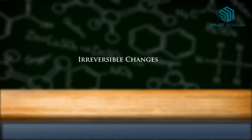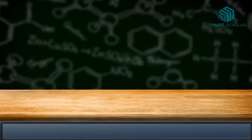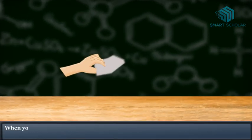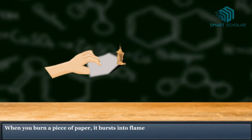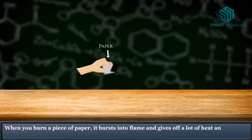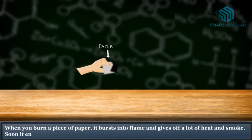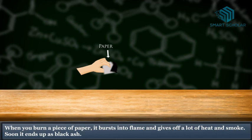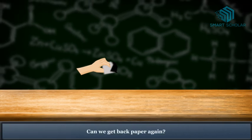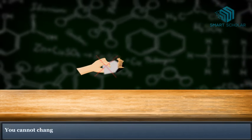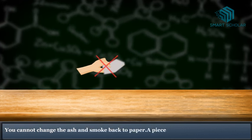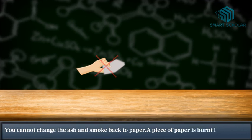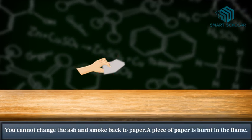Now let us explain irreversible changes. Burning of paper: When you burn a piece of paper, it bursts into flames and gives off a lot of heat and smoke. Soon it ends up as black ash. Can we get back the paper again? You cannot change the ash and smoke back to paper. The burning of paper is an irreversible change.